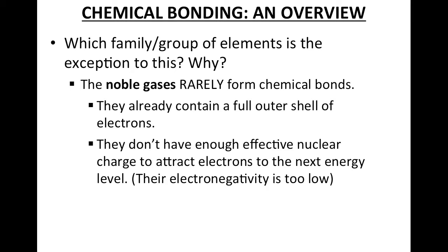Now that we know periodic trends, we can discuss this in terms of electronegativity. As we go across the periodic table, our effective nuclear charge gets bigger — it pulls valence electrons in tighter. However, for a noble gas, which has the strongest effective nuclear charge in its row, if it wanted to gain another electron, that electron would have to be in an outer energy level. The effective nuclear charge is not strong enough to attract an electron in the next energy level, so its electronegativity is too low to attract an electron there.